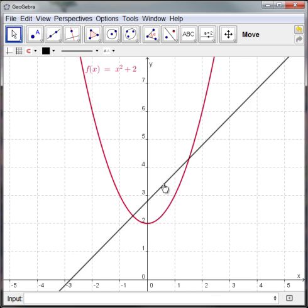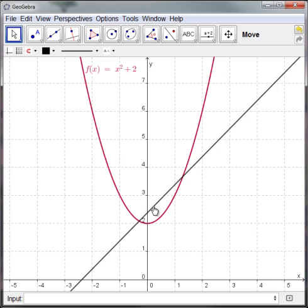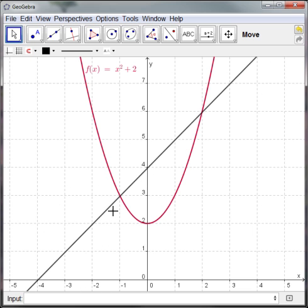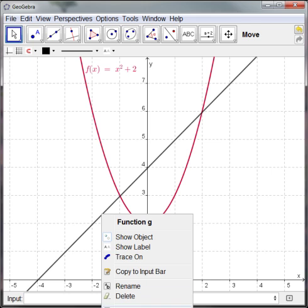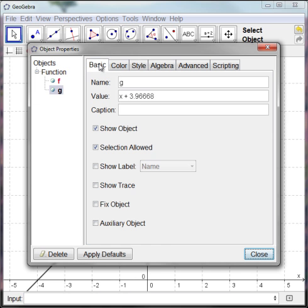Now, I can actually grab this and move it if I want to. That obviously changes the definition of the function. And if I go to the basic, you can see it's changed it to x plus 3.9668. Now, I can change it here as well. Let's make that a 4.